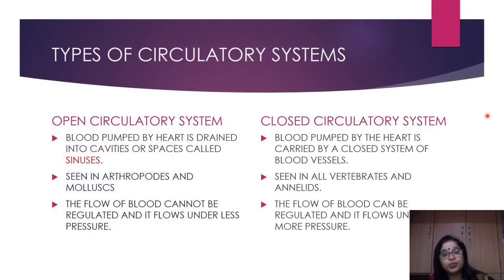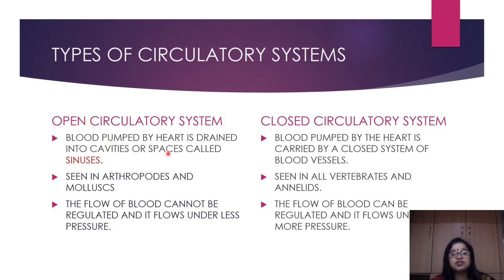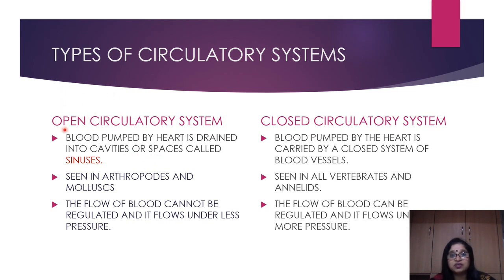There are two major types of circulatory system: the open circulatory system and the closed circulatory system — both names are self-explanatory. In an open circulatory system, blood is pumped by the heart and drained into cavities or spaces called sinuses. Here, the cells are in direct contact with the circulating fluid — they are bathed in it — which is why we call it an open circulatory system.